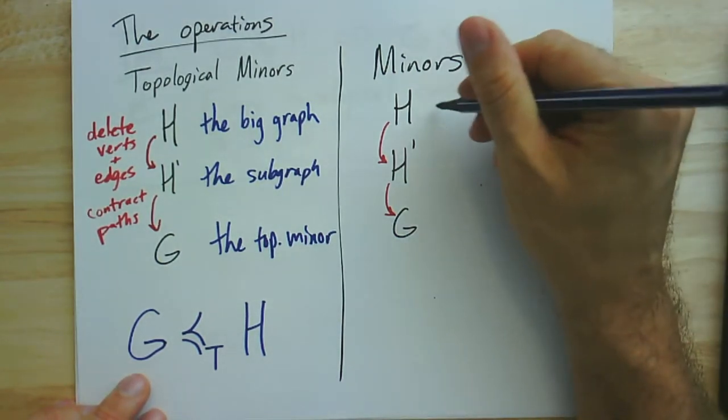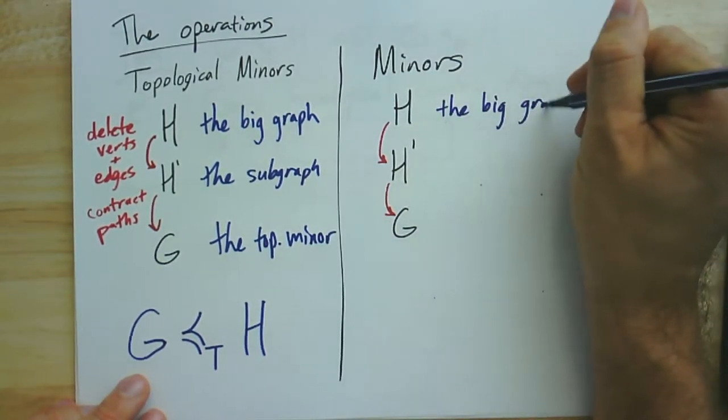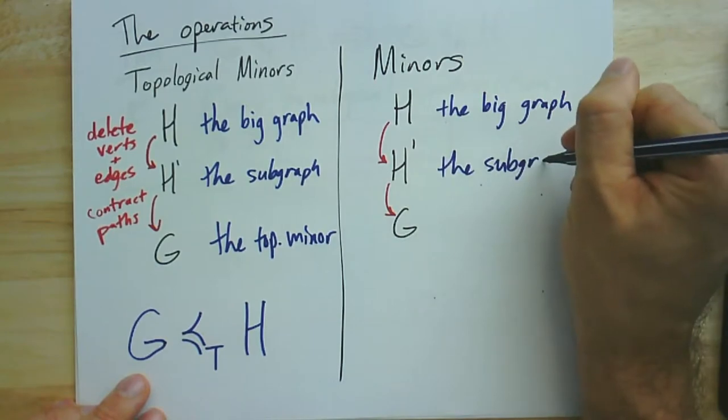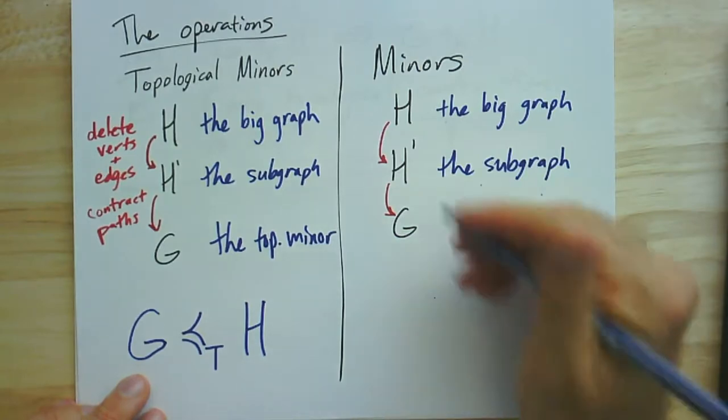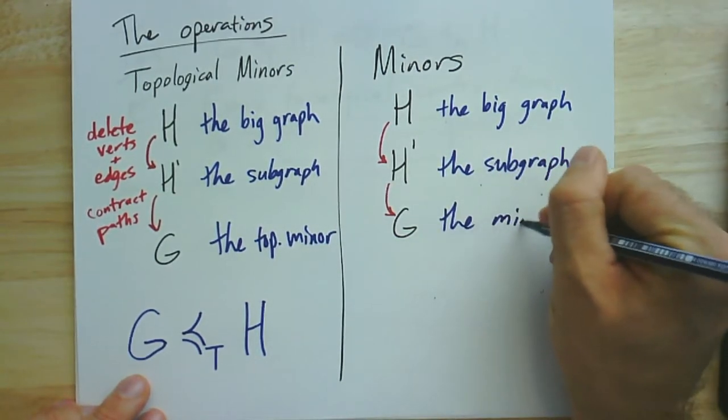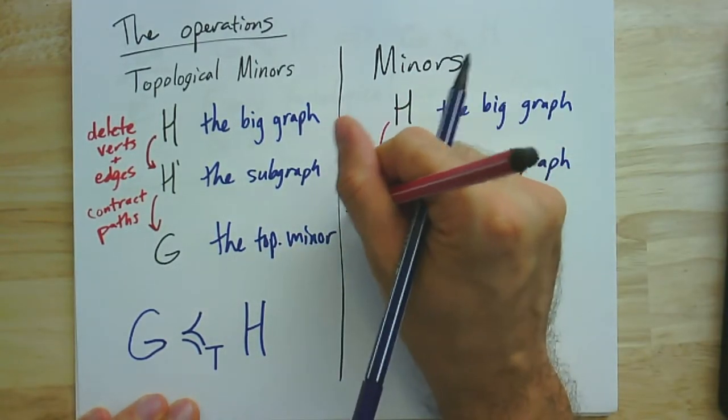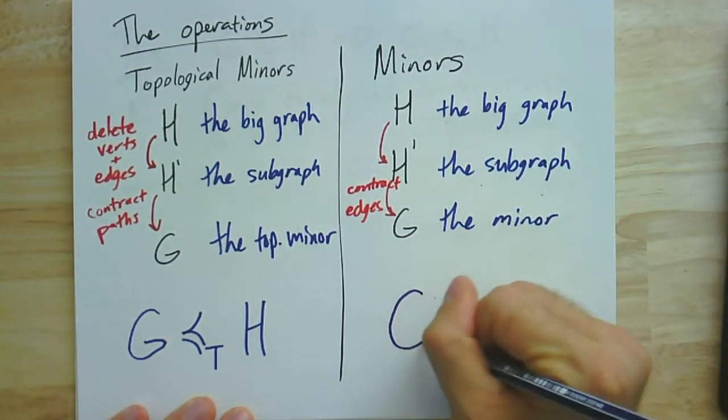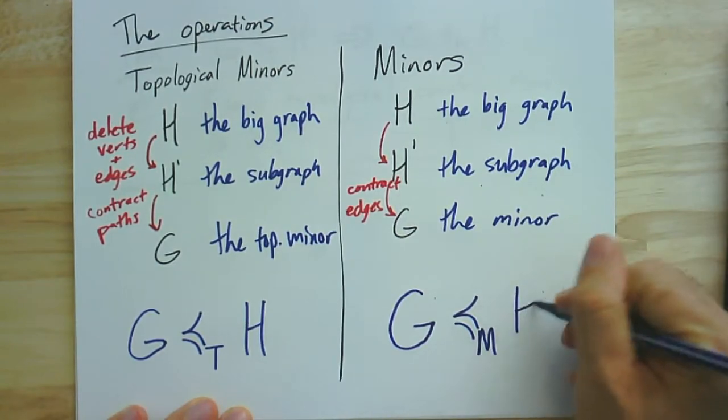Now, in the case of minors more generally, again, we start with the big graph, H. We take a subgraph. And as an operation, this is deleting things, removing vertices, removing edges. And then we end up with the minor, with the last step where we contract edges. So here we're contracting edges. And we are free to contract any edges we want to get from H prime to G. And the notation for this is very similar, except the T is going to be an M. We're going to write it like this. G is a minor of H.